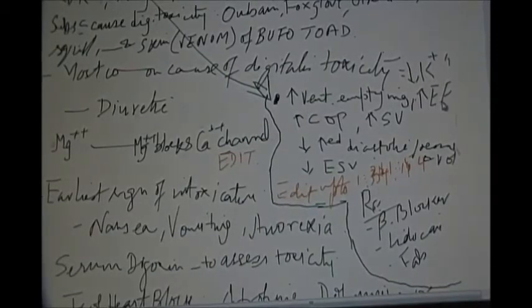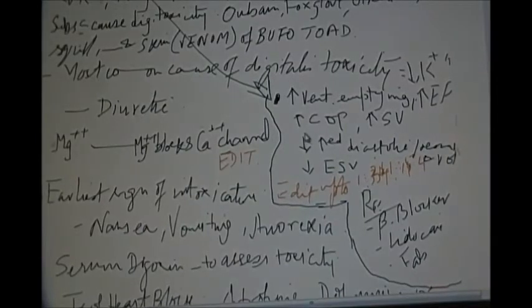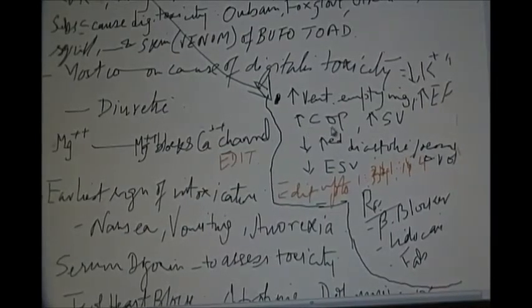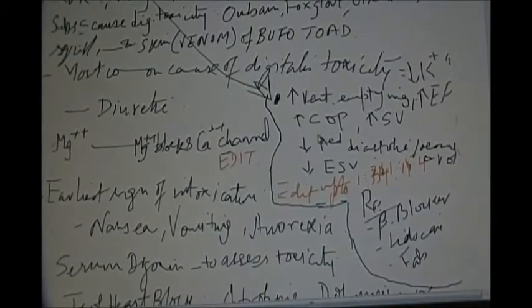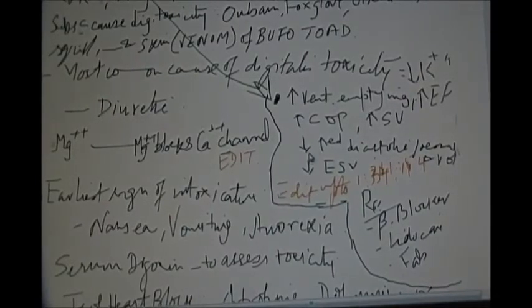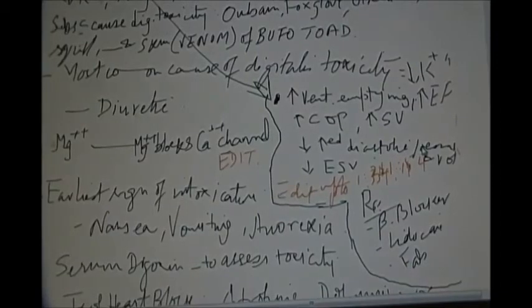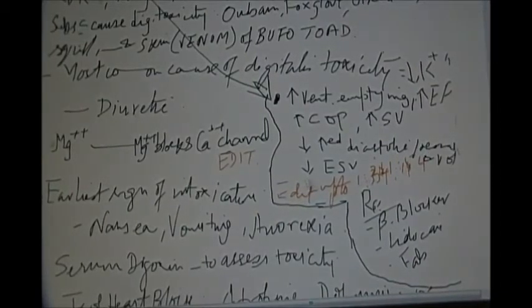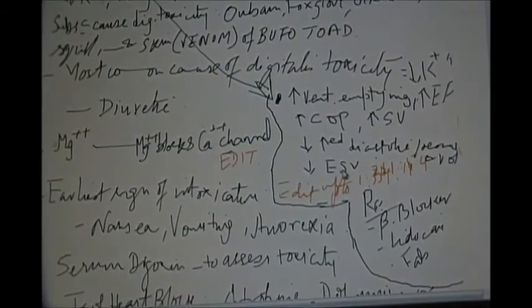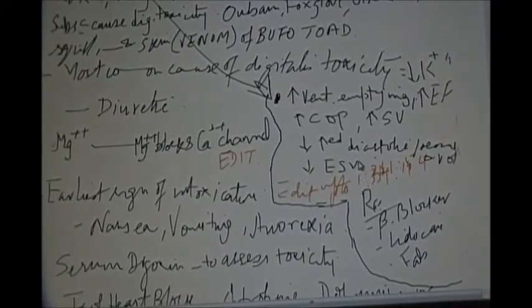The increased force of contraction increases the ventricular emptying, increases the ejection fraction, increased stroke volume, and increased cardiac output. It decreases the increased diastolic pressure and volume and decreases the end systolic volume.